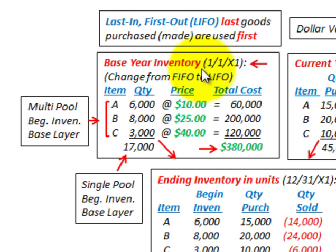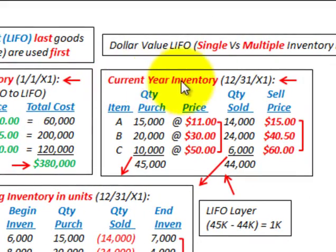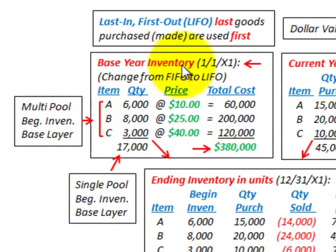In either case, whether we're working with single or multiple pools, we have to determine some base year inventory. Then we have to have some current year inventory or inventory transactions during the year, and what we have to do is adjust these current year inventories back to the base year inventory.